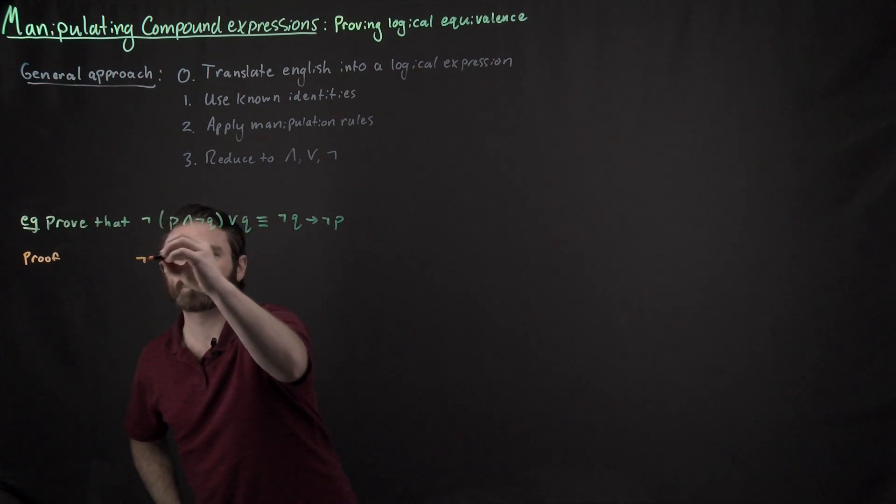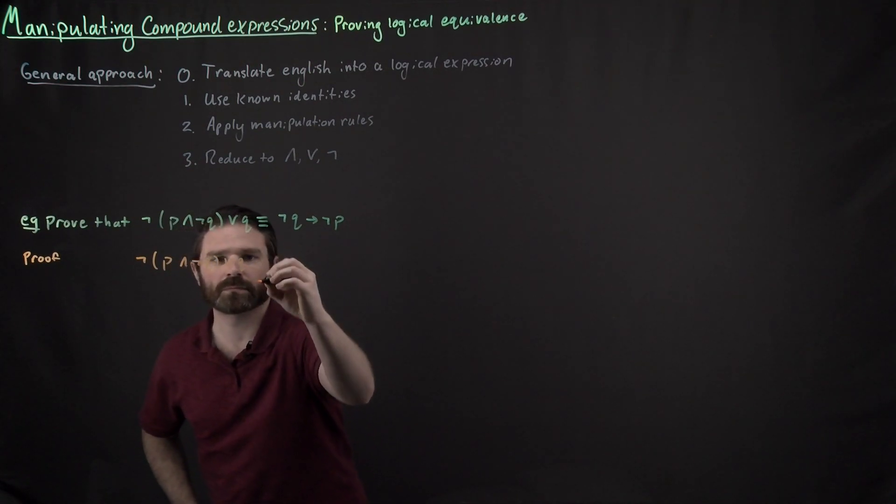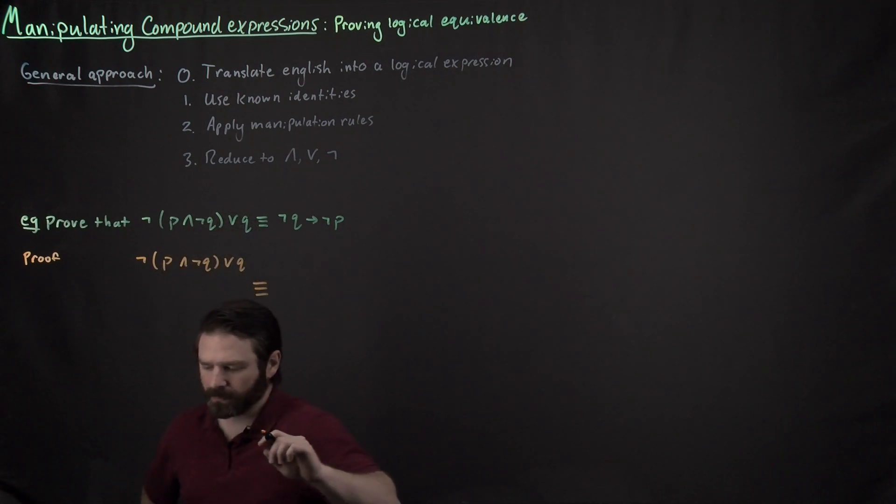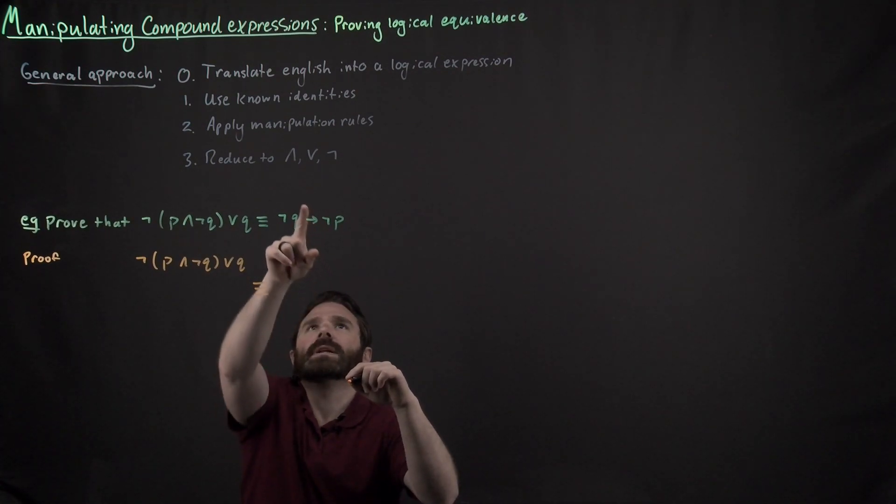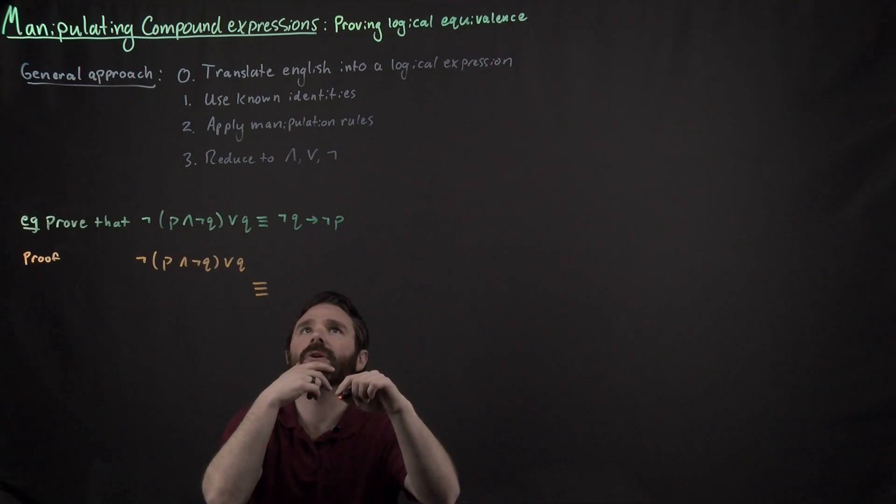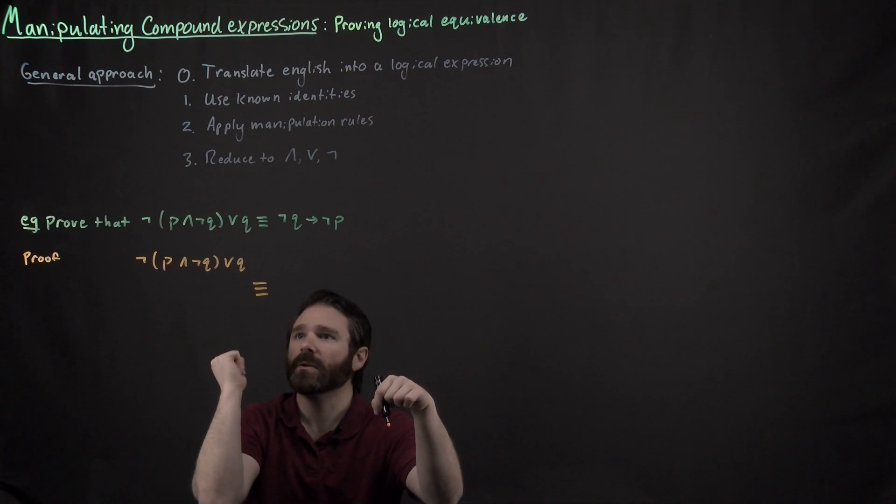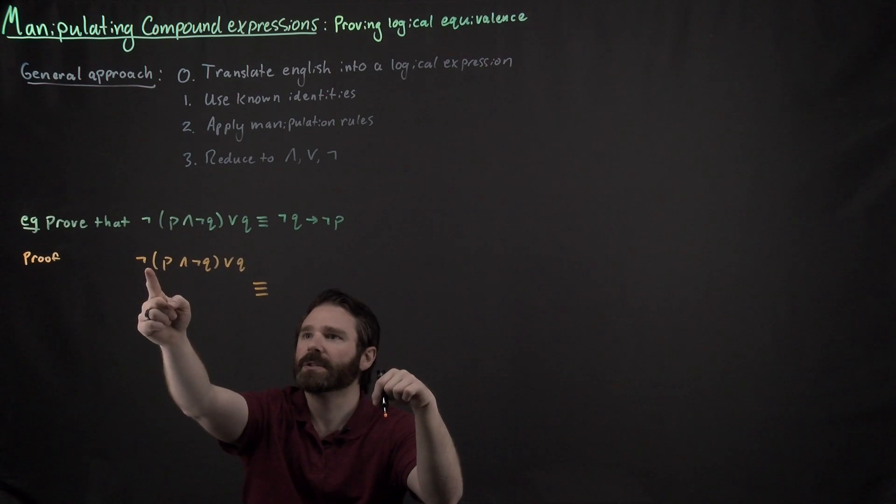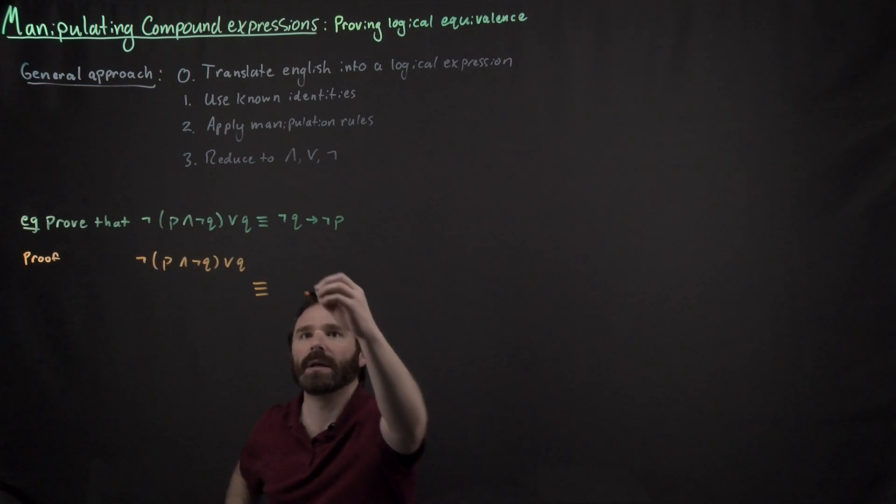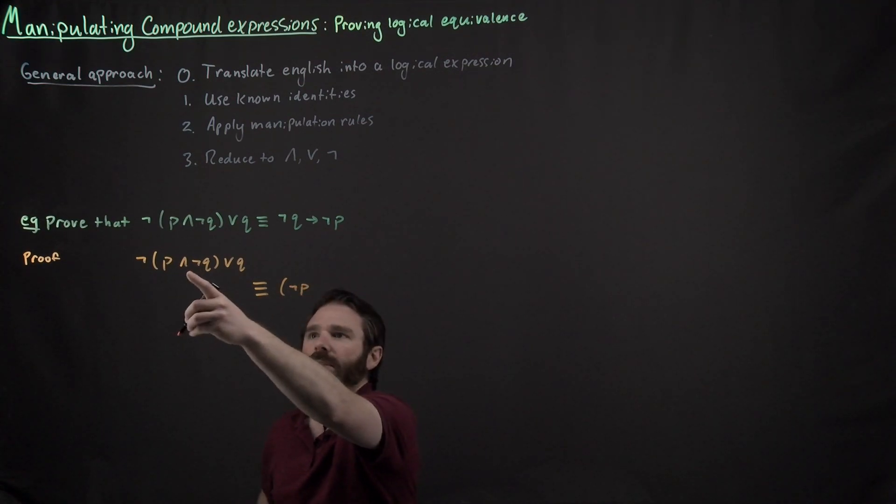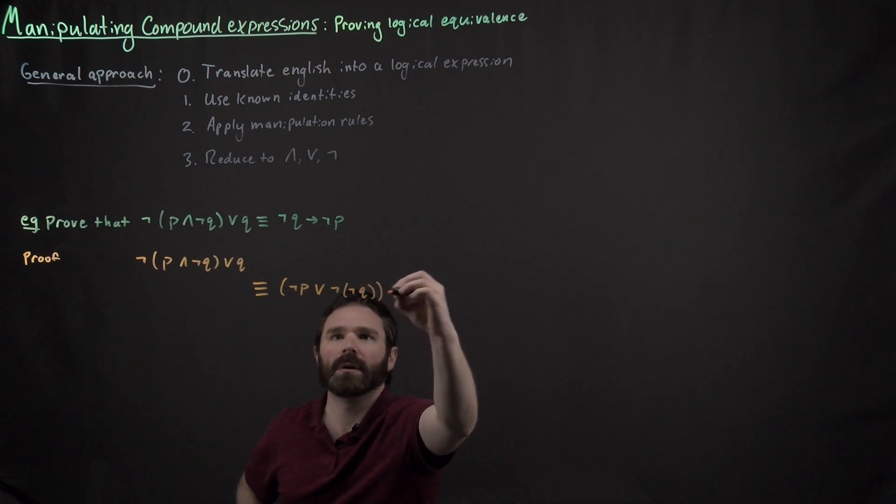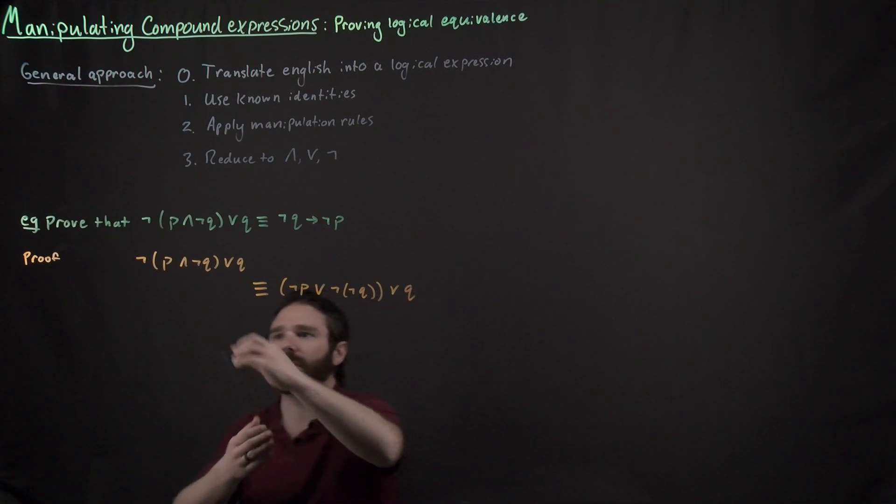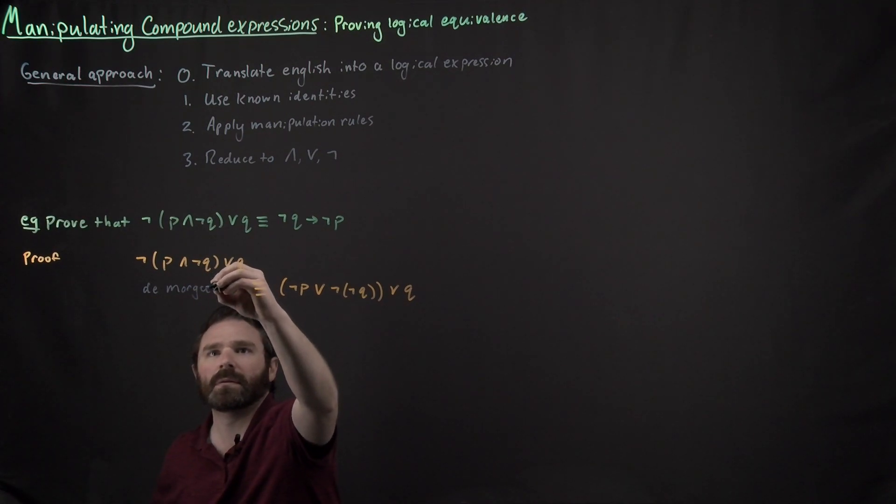So writing this down. Let's see. I don't immediately see any known identities that I can apply to this thing right here. So I'm going to go ahead and use some of my manipulation rules. So in particular, I see an AND and I see a NOT on the outside. So I'm going to use DeMorgan's Law to go ahead and distribute this NOT inside this expression right here. So then we would get NOT P, DeMorgan's Law says I flip that AND to an OR. Then I get a NOT NOT Q OR Q right here. So here I've used DeMorgan's Law.